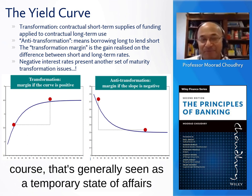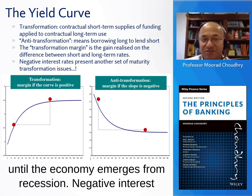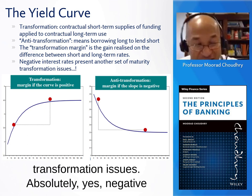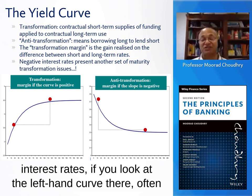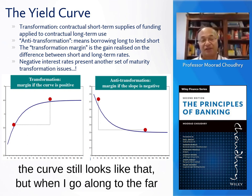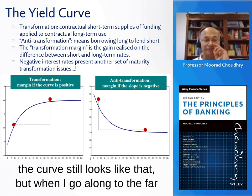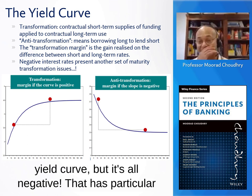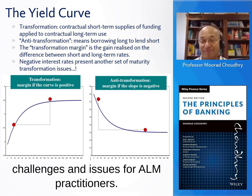An inverted yield curve is generally seen as a temporary state of affairs until the economy emerges from recession. Negative interest rates, noted in the last bullet point, present another set of maturity transformation issues. Often the curve still has a positive slope, but when you go along to the far end it's still below zero — the y-axis is still below zero even at the far end. So I've got a positively sloped yield curve but it's all negative, and that has particular challenges and issues for ALM practitioners.